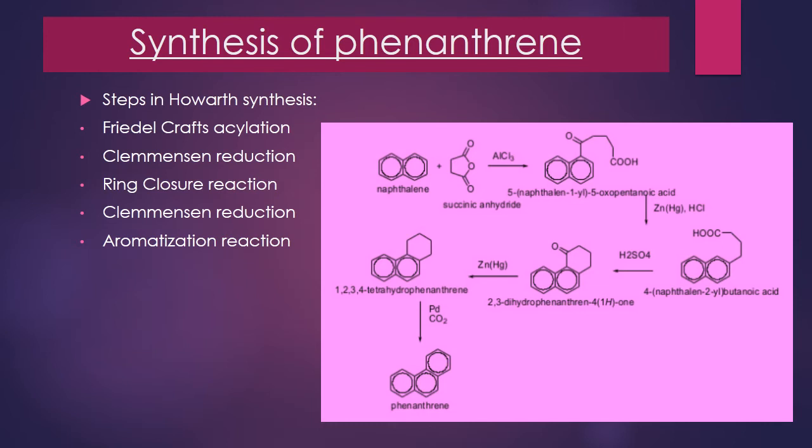In the first step, naphthalene and succinic anhydride are heated in the presence of aluminium chloride to form alpha-naphthyl propanoic acid. In the second step, this alpha-naphthyl propanoic acid is treated with amalgamated zinc in the presence of HCl to give gamma-naphthyl butyric acid via Clemmensen reduction.